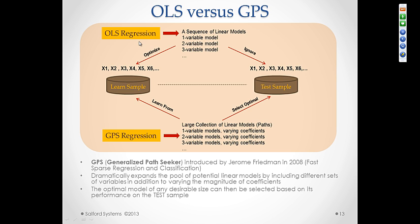And just like conventional OLS regression optimizes values of coefficients with learned sample and gives a limited models. The GPS regression expands that set enormously by introducing all of these alternative configurations in all of the intermediate points. Once you have that expanded pool, you can evaluate it on the test sample.